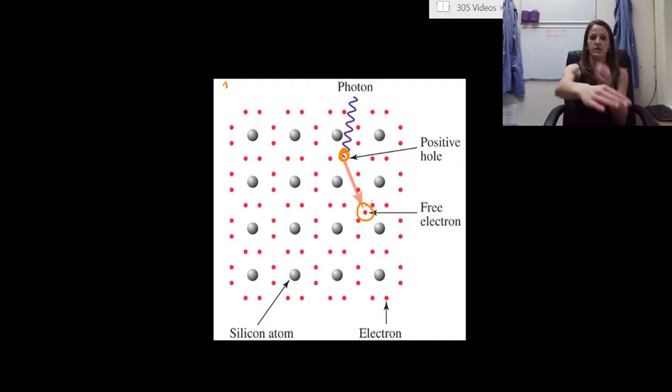So you have this current, right? Anytime your electron is moving across the surface, that's what gives you your current, or it allows for the flow of electrons.